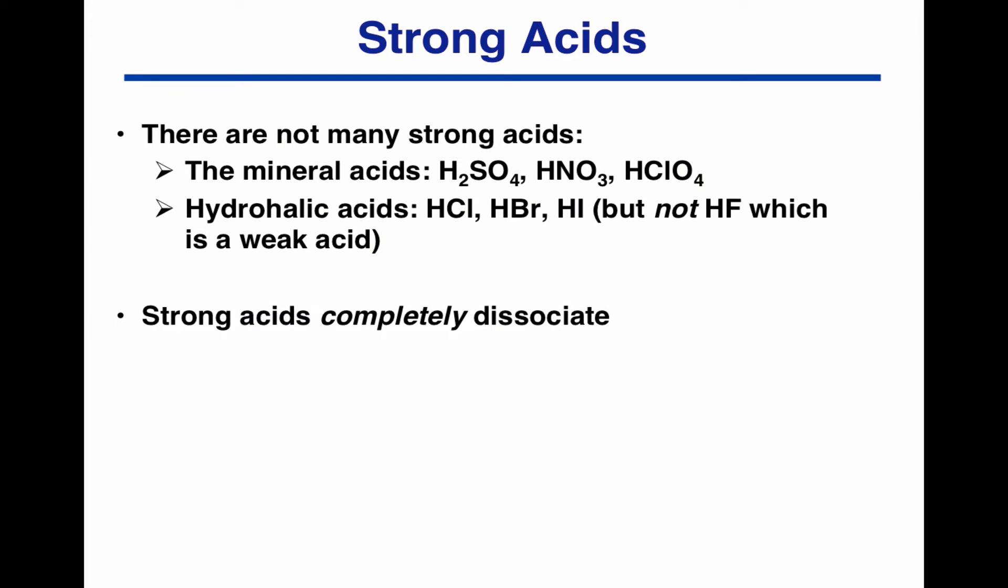A strong acid is one that completely dissociates, so if we put it in water, HCl completely splits up into H plus and Cl minus. So if we have a bottle that says it's 0.1 molar HCl, we know that it's 0.1 molar HCl splitting up completely into 0.1 molar H plus and 0.1 molar Cl minus. So the H plus concentration is just what it says on the bottle.